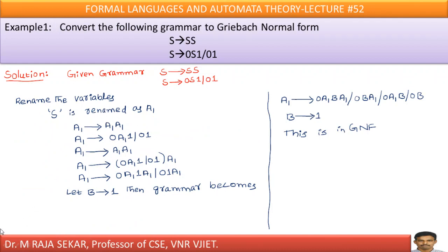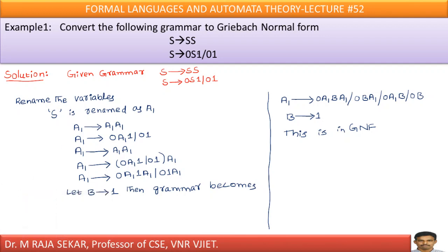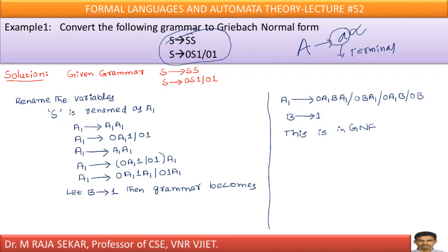Example 1: Convert the following grammar into Greibach Normal Form. The definition says each production must start with a small letter — that is, each production must start with a terminal. But here there is difficulty: this production starts with a non-terminal, a capital letter.